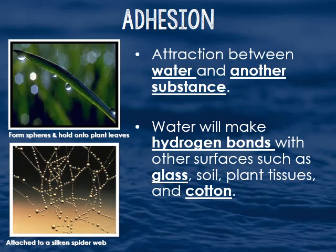The opposite of cohesion is adhesion. Adhesion is the attraction between water and another substance. If you look at this image, you'll see a water droplet forming a sphere attached to a plant leaf — held there by adhesive forces. And if you look at the silk spiderweb, you'll see the same thing: all those water droplets are holding on to the silk because of adhesion. Water makes hydrogen bonds with other surfaces like glass, soil, plants, and cotton, and that's what allows the two to stick together.